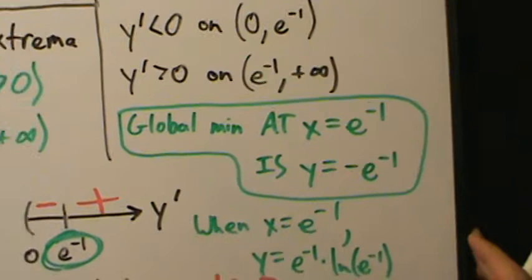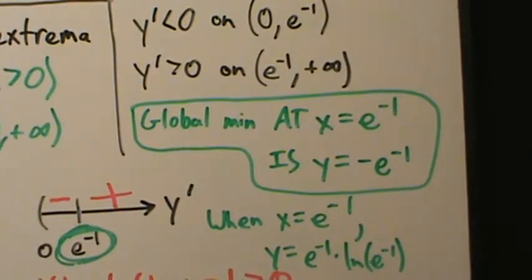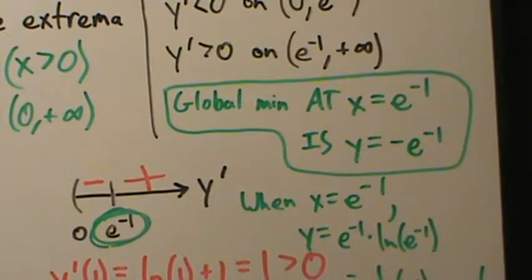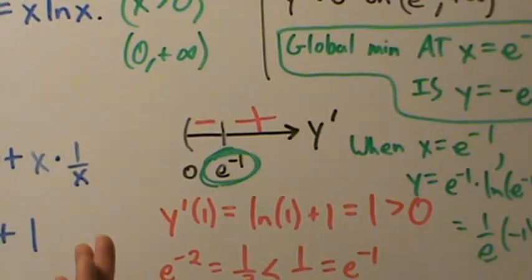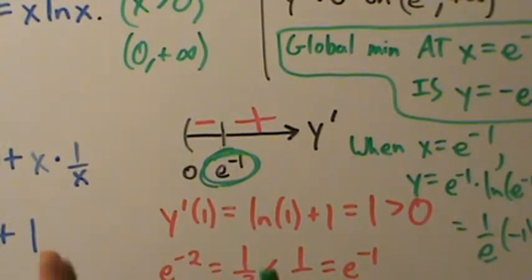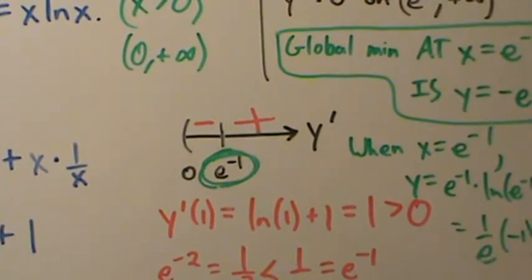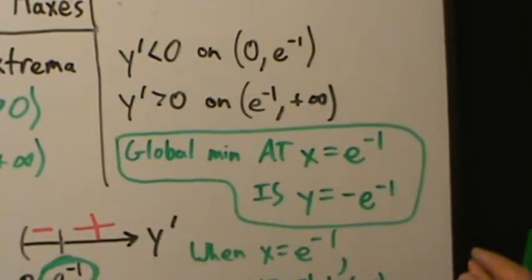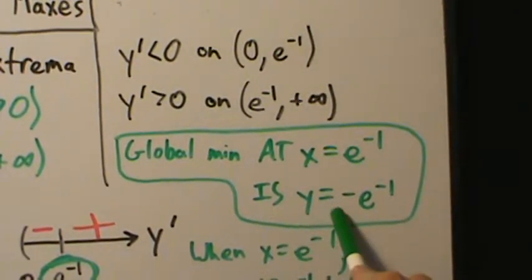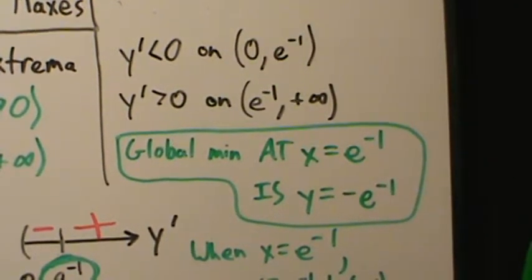This function has no global max. The little extra step we had to do was apply the first derivative test, and then use the theorem that says if you have only one critical point and you have a local min there, then it's also a global min. The answer: global min at x equals e to the negative 1, and the value is y equals negative e to the negative 1. That's it for the question. Let's talk a little bit about that theorem we used.